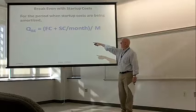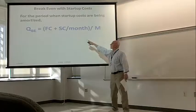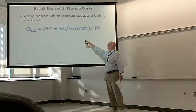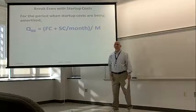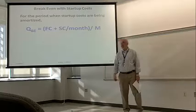So, quantity breakeven, fixed costs, just add the start-up cost per month, that allocation, and then divide the sum by the margin. So, it's really not that much different.